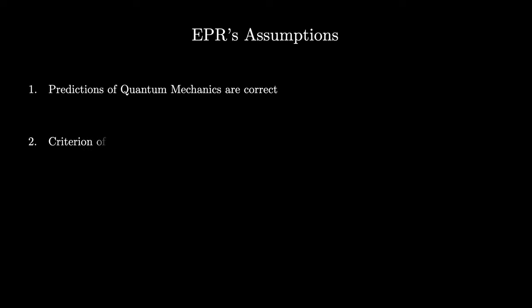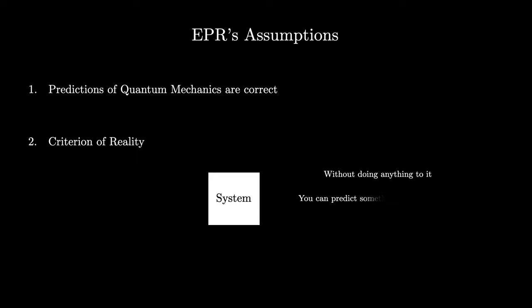The second assumption is something they call a criterion of reality. This can be a bit difficult to understand based on the wording of the paper, but essentially what it means is that in any situation where you have a physical system, if, without doing anything to the system, you are able to predict with certainty or with a probability of 100% some physical quantity of the system, then there must be something real that is responsible for that physical quantity.